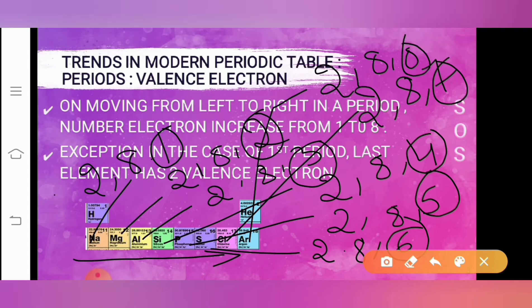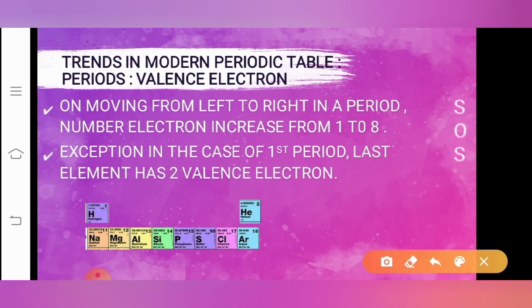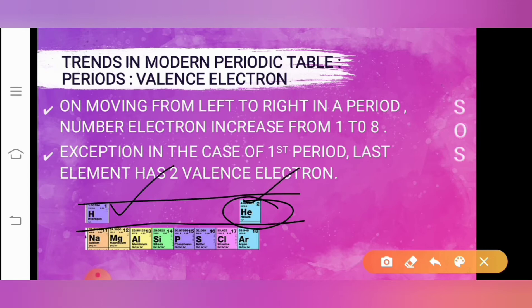Valence electrons means the number of electrons present on the outermost orbit of that element. You can observe: sodium has only one valence electron, and it keeps increasing from one to eight. There is an exception in the case of helium — in the first period there are only two elements, hydrogen and helium, and helium can accommodate only two electrons on its orbit.